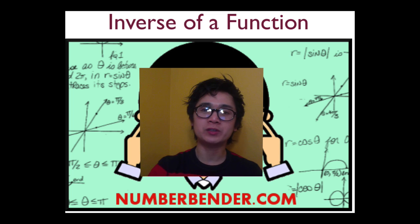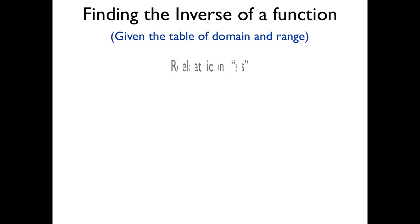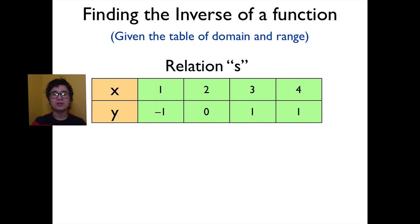Now let's find the inverse of a function. Let's say we have this particular relation for x and y. Our values of x, or the domain of this function, is 1, 2, 3, and 4. And the range, or the value of y for this function, is negative 1, 0, 1, 1.